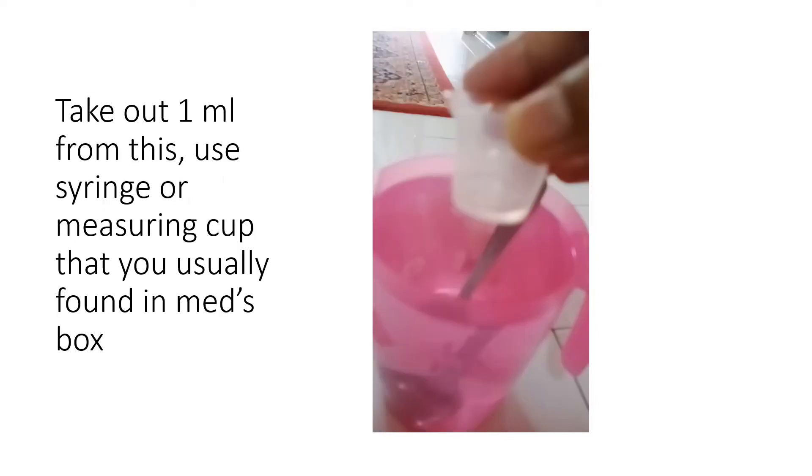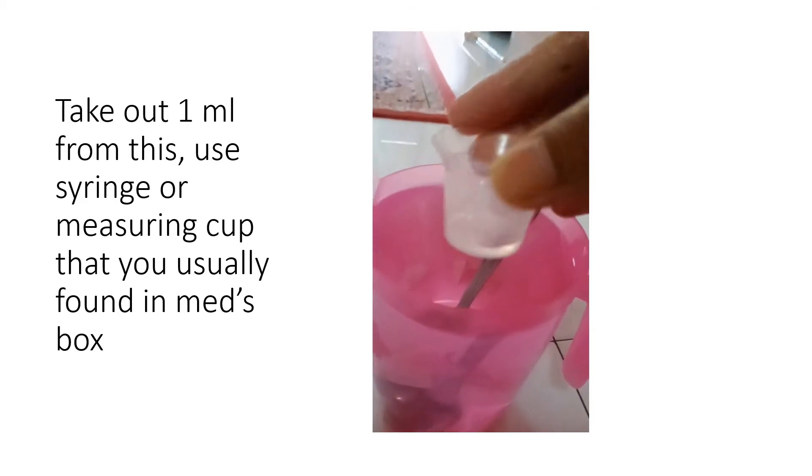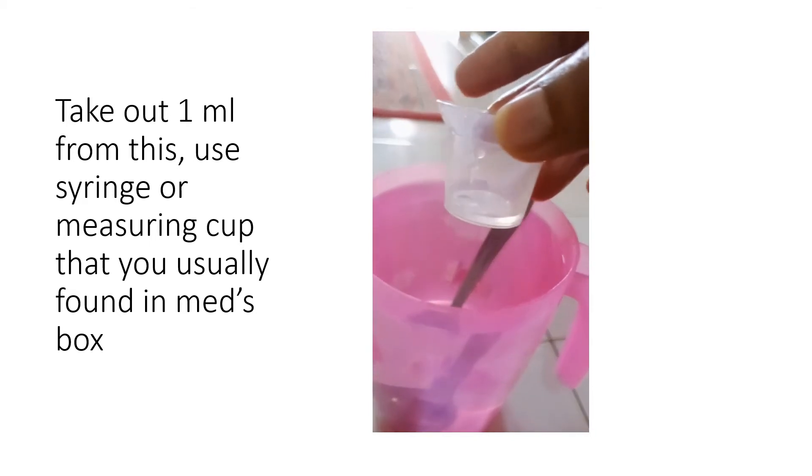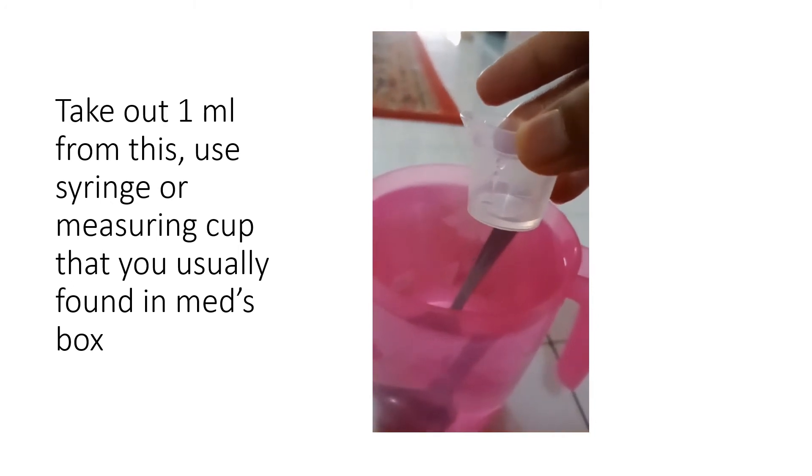Next, after everything has been dissolved, take out 1 milliliter from the 25 over 1000 solution. This 1 milliliter contains 25 grams in 1000, and we're going to use this to dilute it. You can use a measuring cup from a medicine box, or sometimes a syringe from a medicine box, which is even better than this cup.